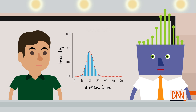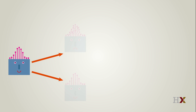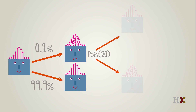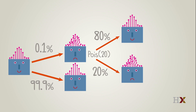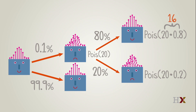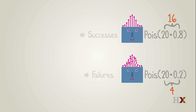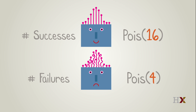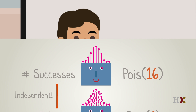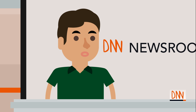That looks very pretty, like a bell-shaped curve. That's another story. But tell us, Professor, how many of the new cases do you predict will be cured? Let's assume that the number of new cases is Poisson of 20, and that they all try the new treatment with success probability 0.8. Then the expected number of new cases treated successfully is 0.8 times 20, which is 16. And the expected number treated unsuccessfully is 4. The distribution of the number of successes is Poisson of 16, and the distribution of the number of failures is Poisson of 4. Surprisingly, these two quantities are independent. With the Poisson number of new cases, knowing the number of successes tells us nothing about the number of failures.